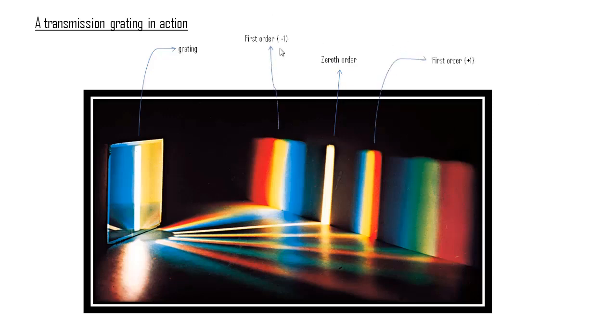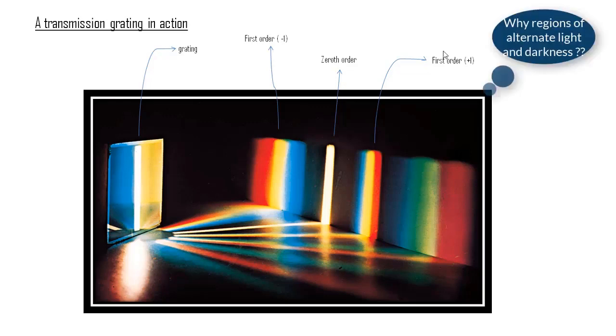These bunches are what we call the diffraction orders. These are what we call the first orders. It is interesting to note that the orders are discrete, meaning that there isn't a continuous band of colors on the screen, and there are periods of light and darkness.